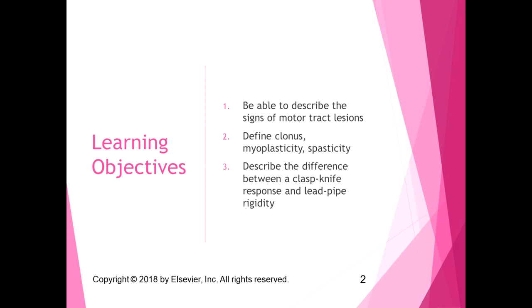In the last section I started talking about motor tract lesions and pathologies, so we're going to talk more about that in this section. I want you to be able to describe the signs of motor tract lesions, define clonus, myoplasticity, and spasticity, and the difference between a clasp knife response and lead pipe rigidity.